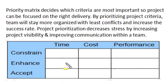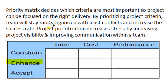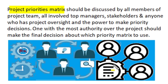The project priority matrix decides which criteria among time, cost and scope performance are most important and should be enhanced, so that the project team can focus on the right delivery. When one among time, cost or performance is enhanced, the team stays more organized with least conflict and that increases the success rate of project implementation. When project priorities are decided with proper communication, it decreases stress and increases project visibility to everyone within the team.